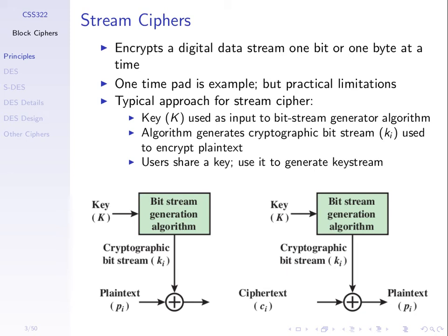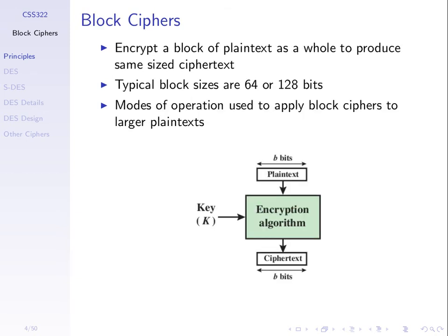Stream ciphers are typically used for encrypting data in real time as we need to send it. We may see some examples of algorithms later. What we're going to focus on is the other variant — block ciphers — because they are in fact more widely used. Instead of encrypting a byte at a time, we encrypt typically a block of 64 or 128 bits at a time — not much difference, 8 bytes or 16 bytes — but the algorithms are much different. They can be slower, although current algorithms and hardware are not much slower. But they don't depend upon random numbers, and random numbers are hard to generate in some cases. So that's the advantage of block ciphers.